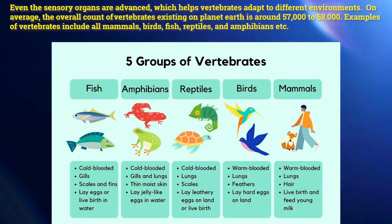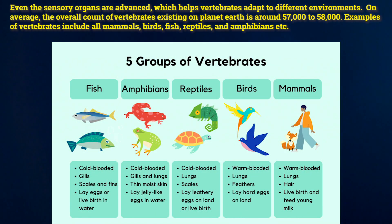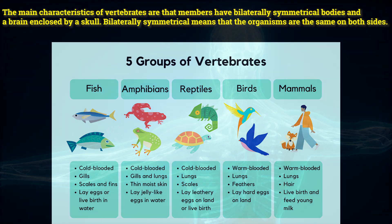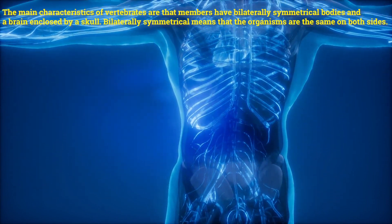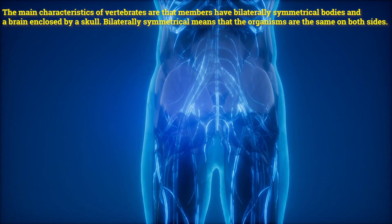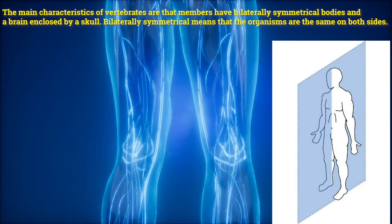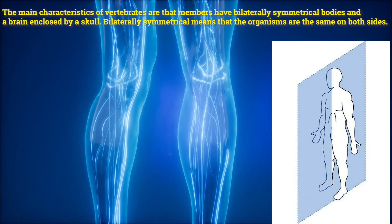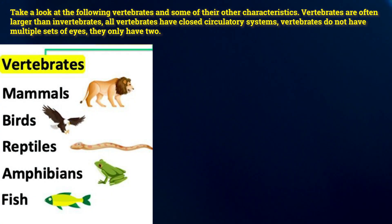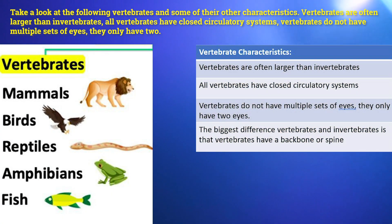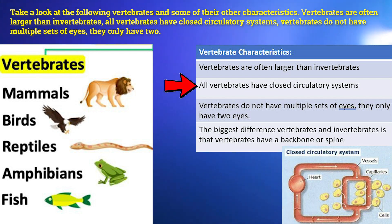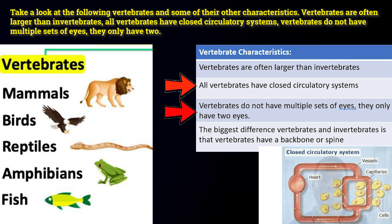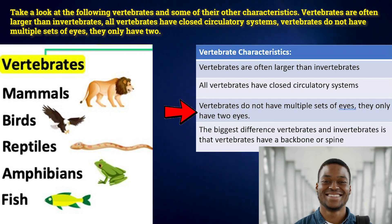Samples of vertebrates include all mammals, birds, fish, reptiles, and amphibians. The main characteristics of vertebrates are that members have bilaterally symmetrical bodies and a brain enclosed by a skull. Bilaterally symmetrical means that the organisms are the same on both sides. Take a look at the following vertebrates and some of their other characteristics. Vertebrates are often larger than invertebrates. All vertebrates have closed circulatory systems. Vertebrates do not have multiple sets of eyes — they only have two.